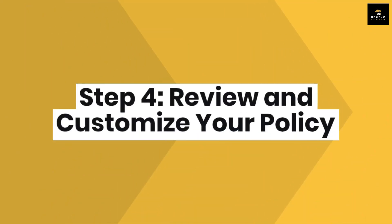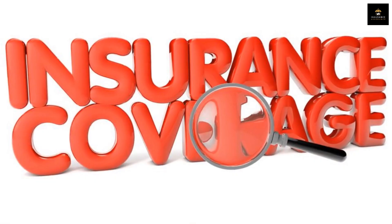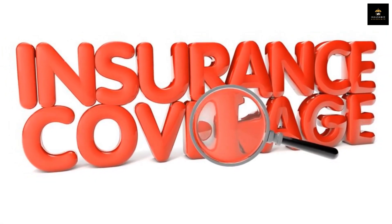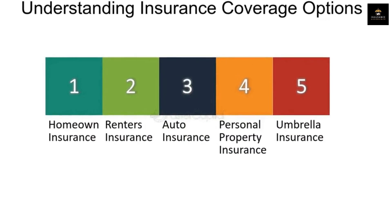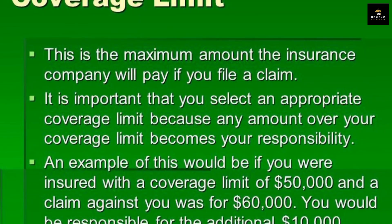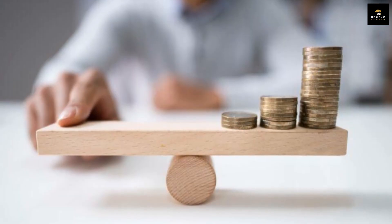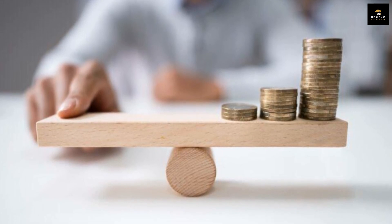Step 4: Review and customize your policy. Once you've received your quote, take a moment to review it and adjust the coverage limits. Most providers will offer a couple of options with different coverage levels. Remember, the higher your coverage limit, the more your policy will cost. So it's all about finding the balance between what you need and what fits your budget.